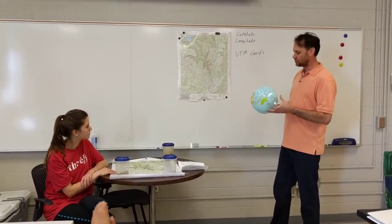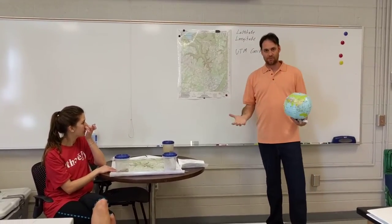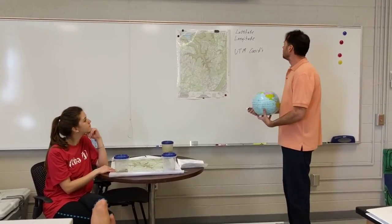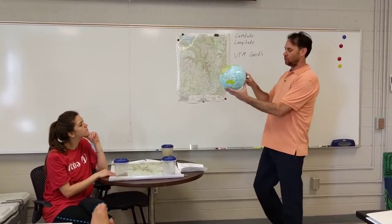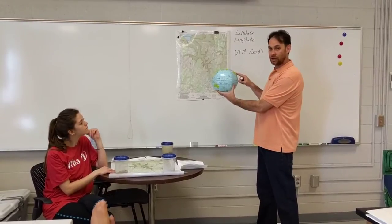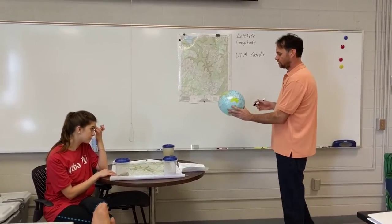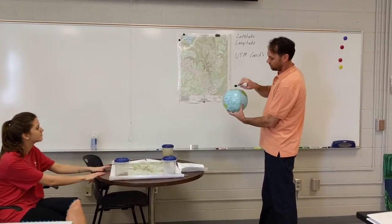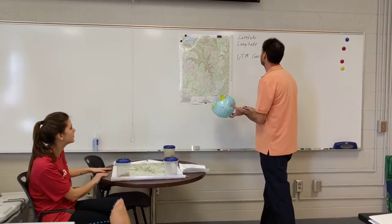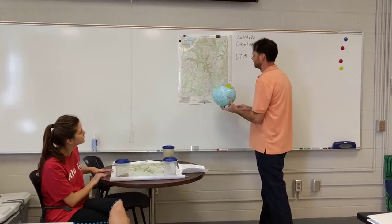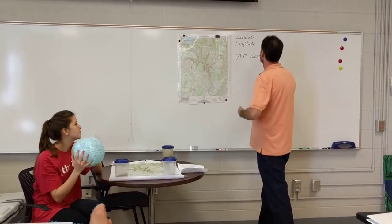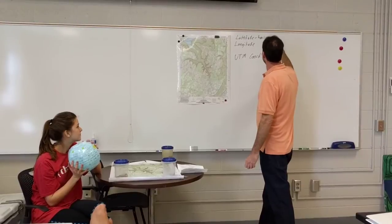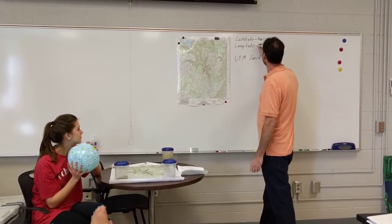Latitude and longitude. You are probably familiar with it; if not, you've at least heard the words. This globe has latitude and longitudinal lines on it. So which is which? Lucy, which one of these is latitude — the horizontal ones or the vertical ones? Horizontal is right, which means that the vertical ones are longitude.